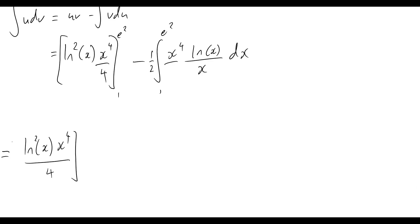And we're evaluating that from 1 to e squared. Now we are subtracting 1 half times the integral 1 to e squared, and we see x to the 4 over x, so I can just rewrite that as x cubed times the natural log of x dx.